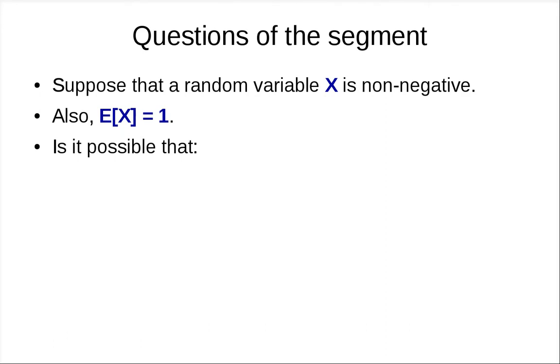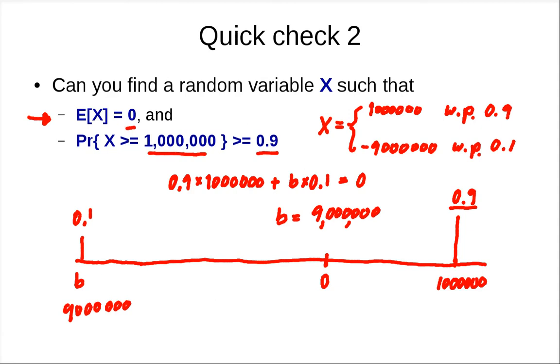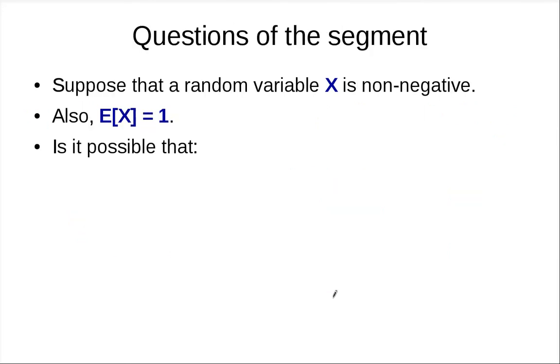Now let me add one more condition. Previously, the problem is you can have a large negative number that offsets the expectation. Suppose we remove this possibility and say that X is non-negative—the smallest value X can take is zero.